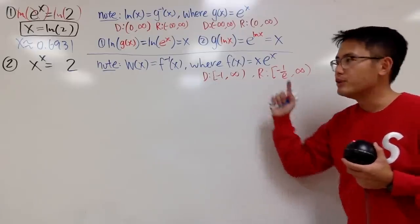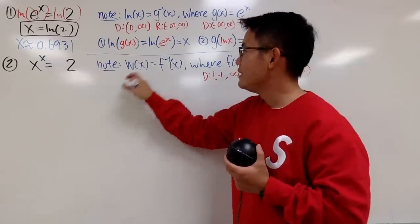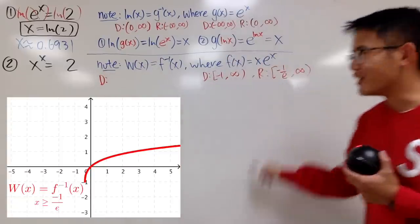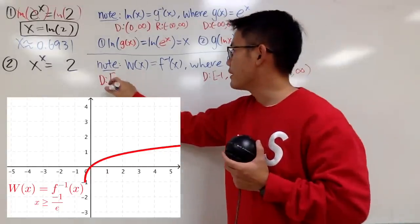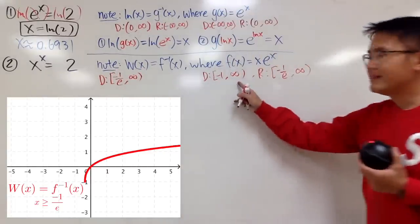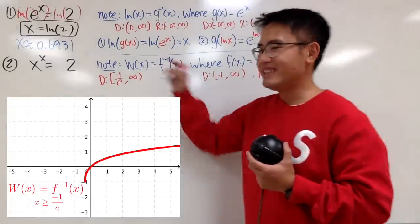Now, once you have this figured out, you can come here, and you will know that the domain of the Lambert W function is just this. So you can put that down, negative 1 over e to positive infinity.